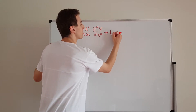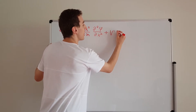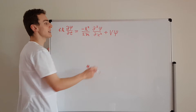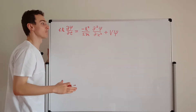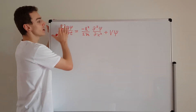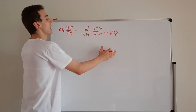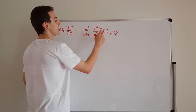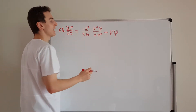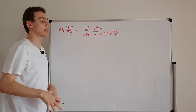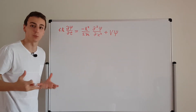Then we have one final term — the potential energy term, where V is the potential energy function. If we find a solution psi to this equation, we can actually use that solution to make some meaningful predictions.